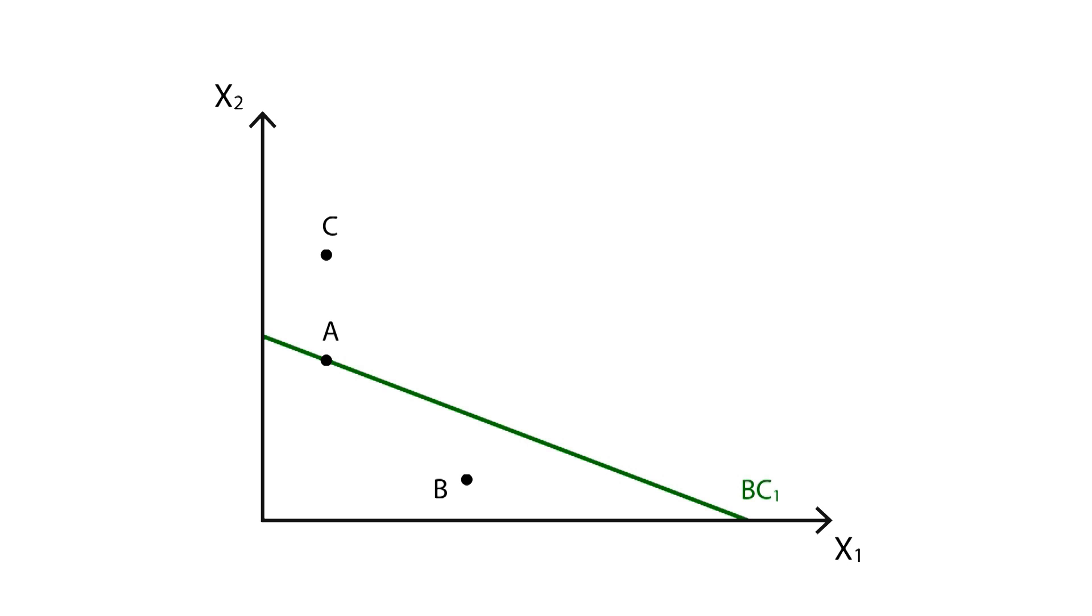Point C represents a bundle of goods that is not attainable, given the current budget constraint. Now, let's see what happens if the budget constraint changes. Let's say this happens because the price of good X1 increases and the price of good X2 drops.